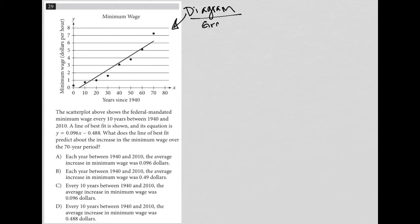So we see that the x-axis here is years since 1940, looks like we have that in increments of 10. And the y-axis here is minimum wage in dollars per hour. Of course, our heading here is minimum wage.